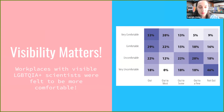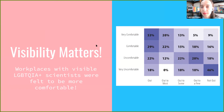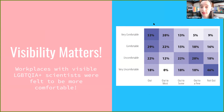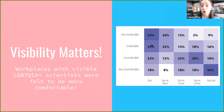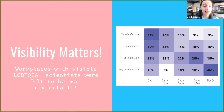The good outcome of this research is that they found that visibility matters. In environments where most people were out of the closet, the environment was perceived to be more comfortable. This is a key to solving the problems we face in academia.